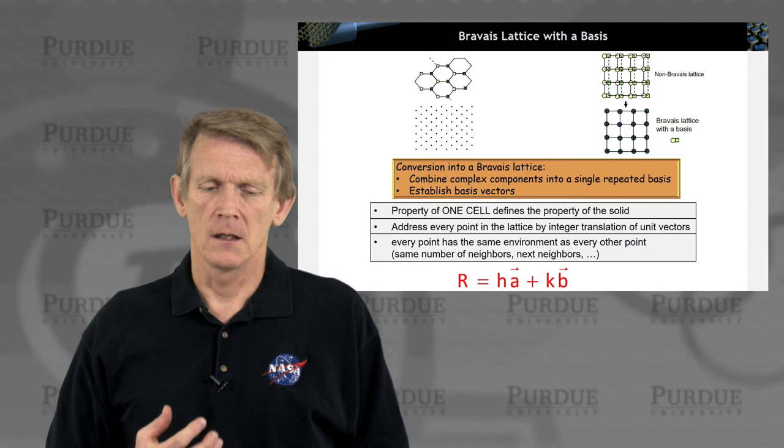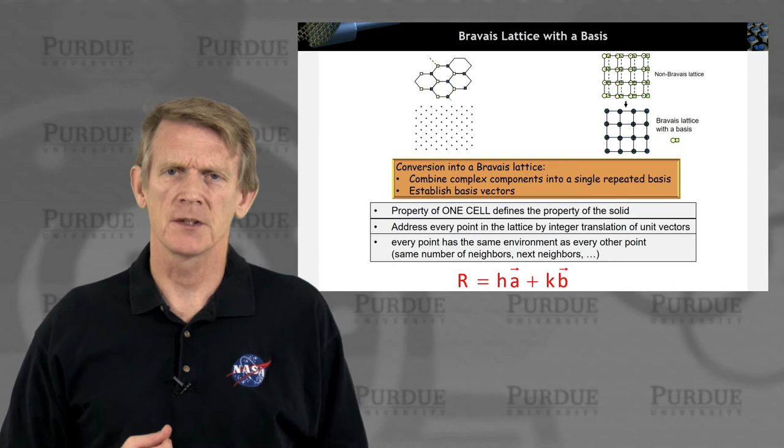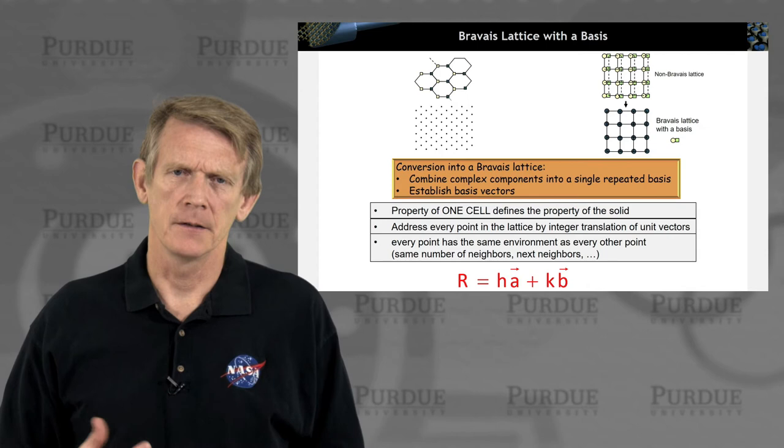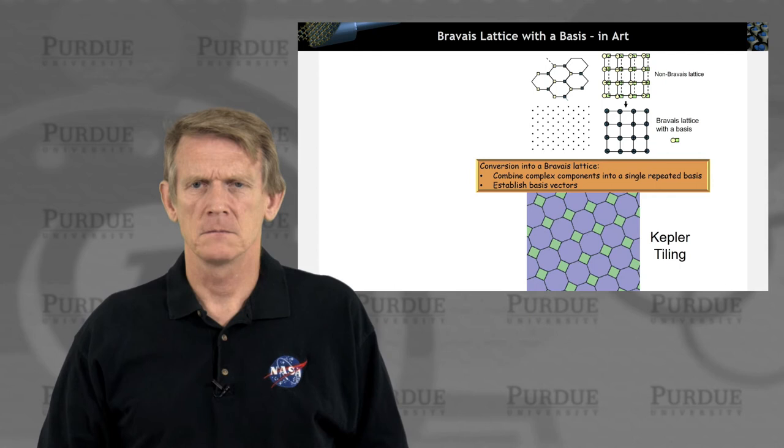So how you get to a Bravais lattice, you combine complex components into a single repeated cell and establish basis vectors for that repeated cell. And again, with those basis vectors, you can reach every atom in the structure.